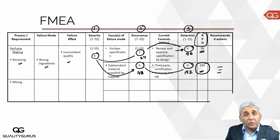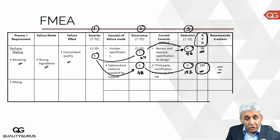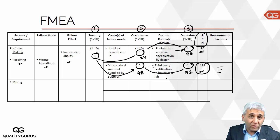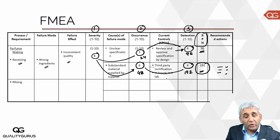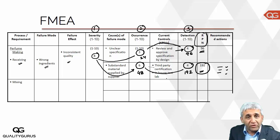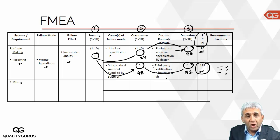Since RPN 192 is more critical, you put a recommendation on how to reduce the chance of that failure occurring — perhaps adding additional inspection or avoiding occurrence by sticking to specific approved suppliers only. This is your recommended action to change the RPN rating. FMEA is a dynamic, live document — once you establish new controls, you update the severity, occurrence, and detection ratings, and the RPN changes accordingly.